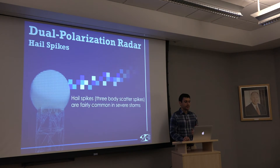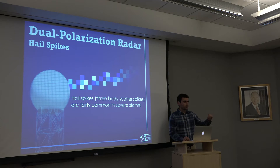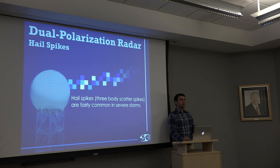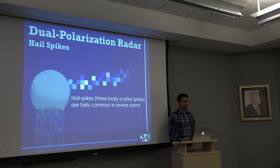Hail spikes, also known as three-body scatter spikes, are fairly common in severe storms — we see them all the time. Now that we have correlation coefficient, it helps point out even those smaller comet tails. That was a fairly clear example, but sometimes they're much smaller, or another storm on the backside can cause them to blend in. So use correlation coefficient to see where values are very low and where a hail spike may be present.